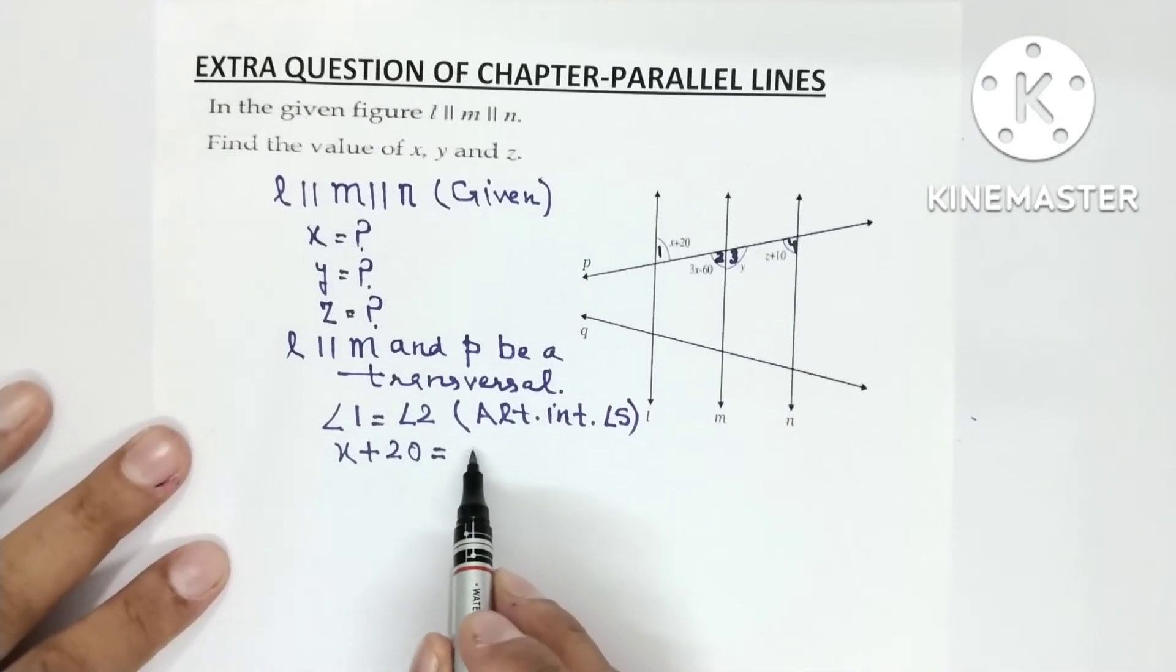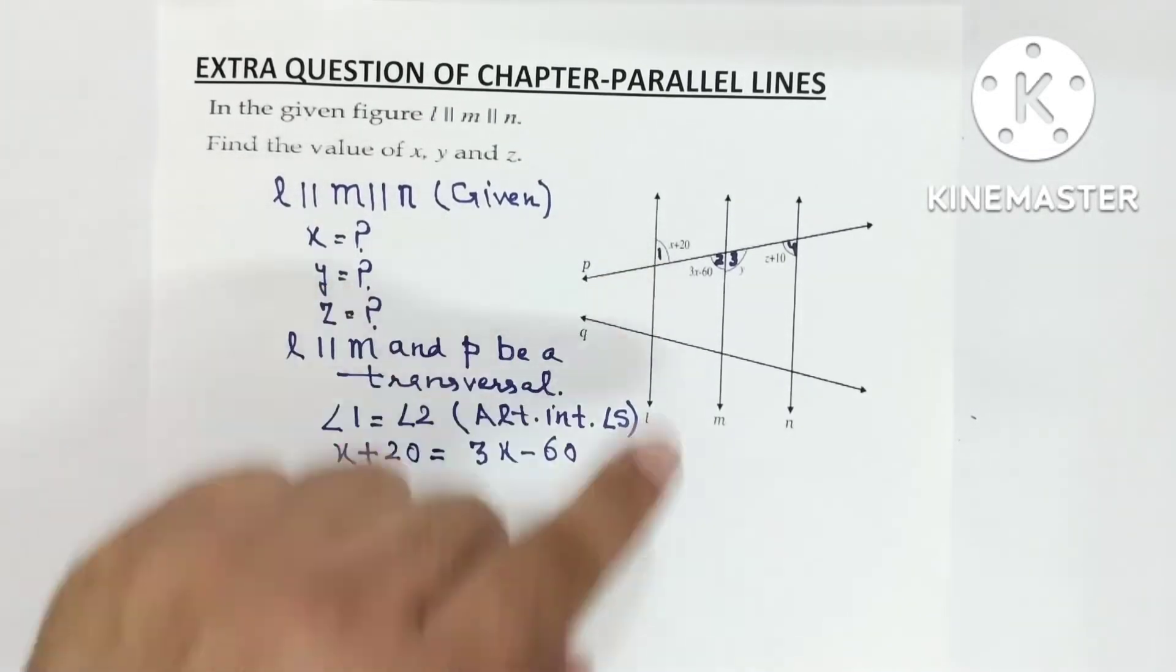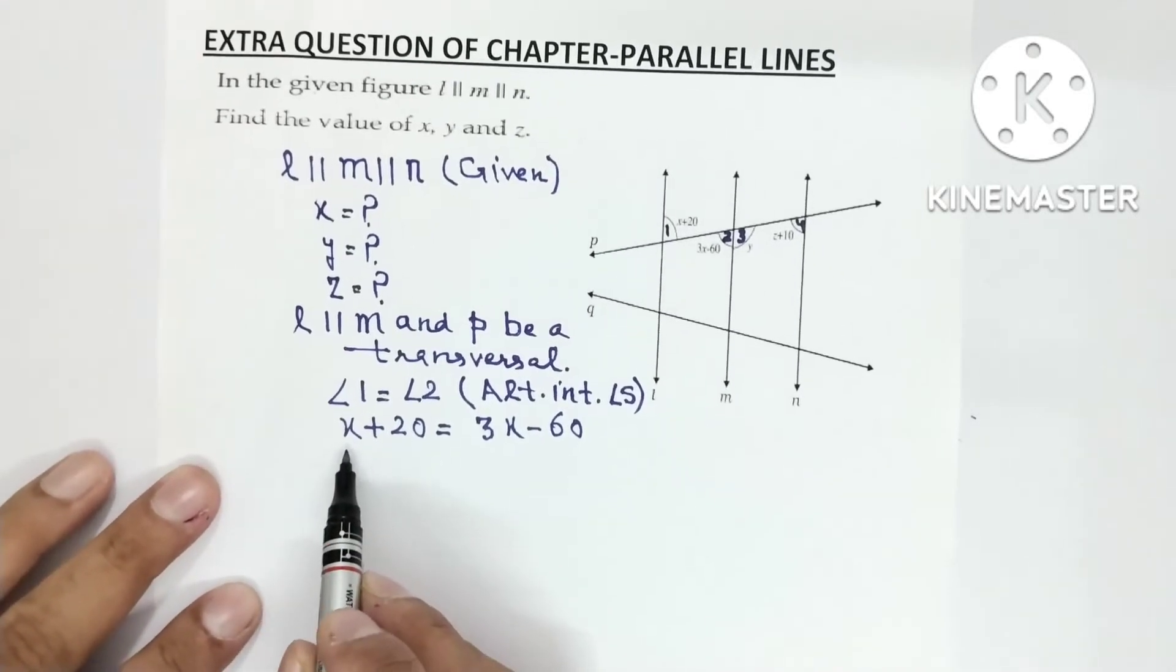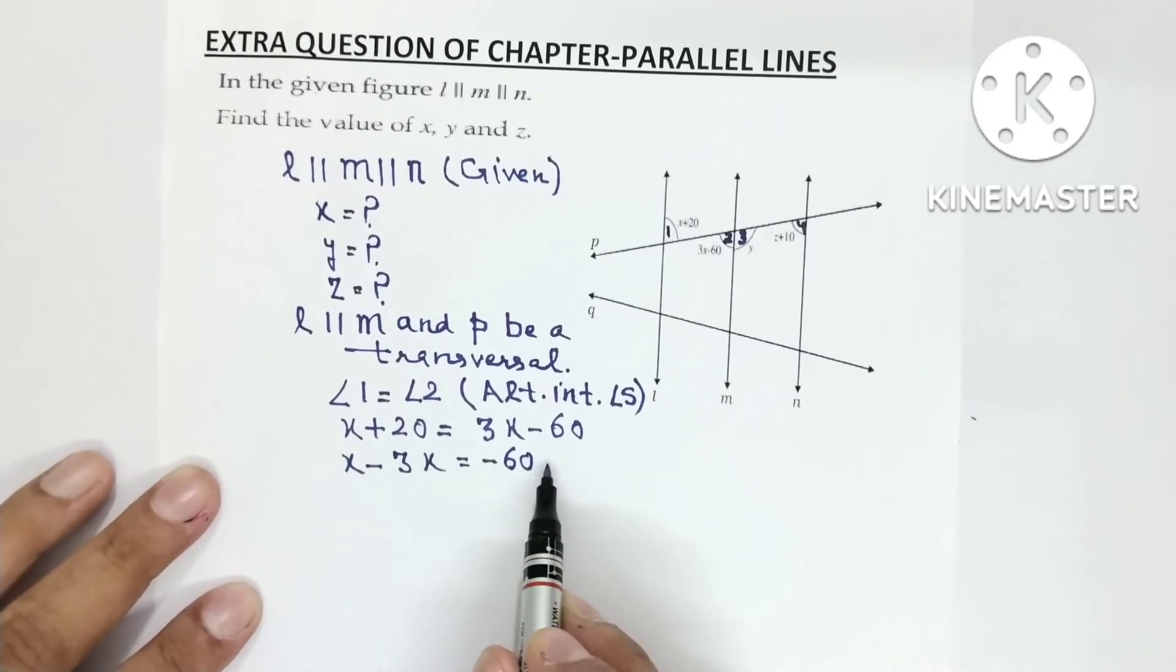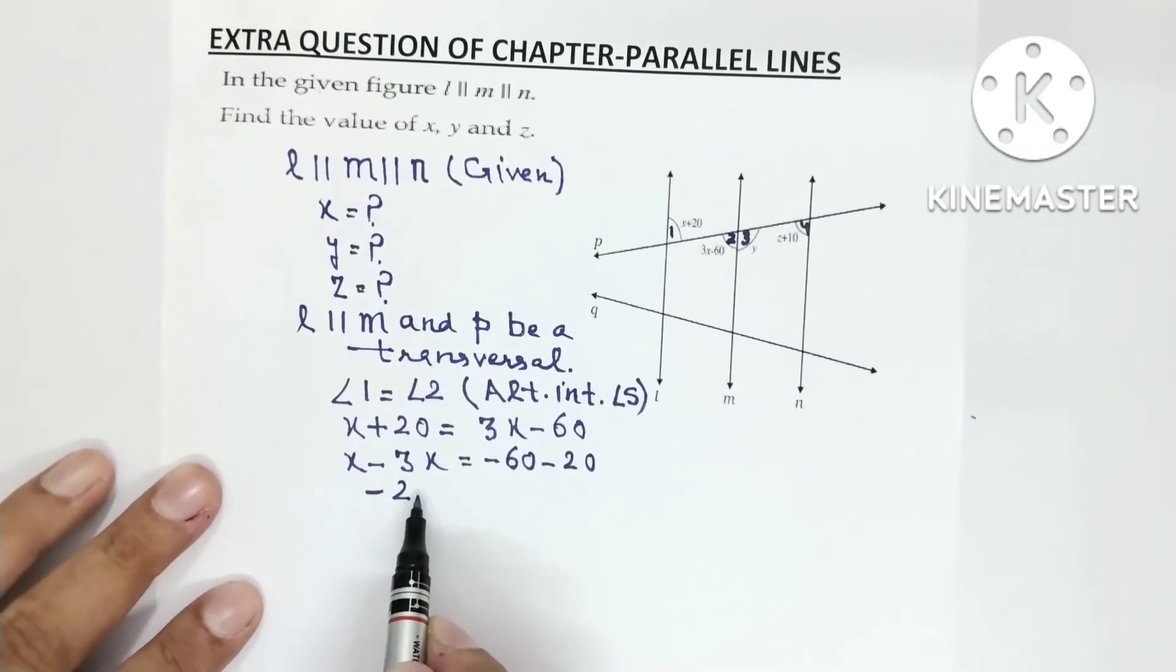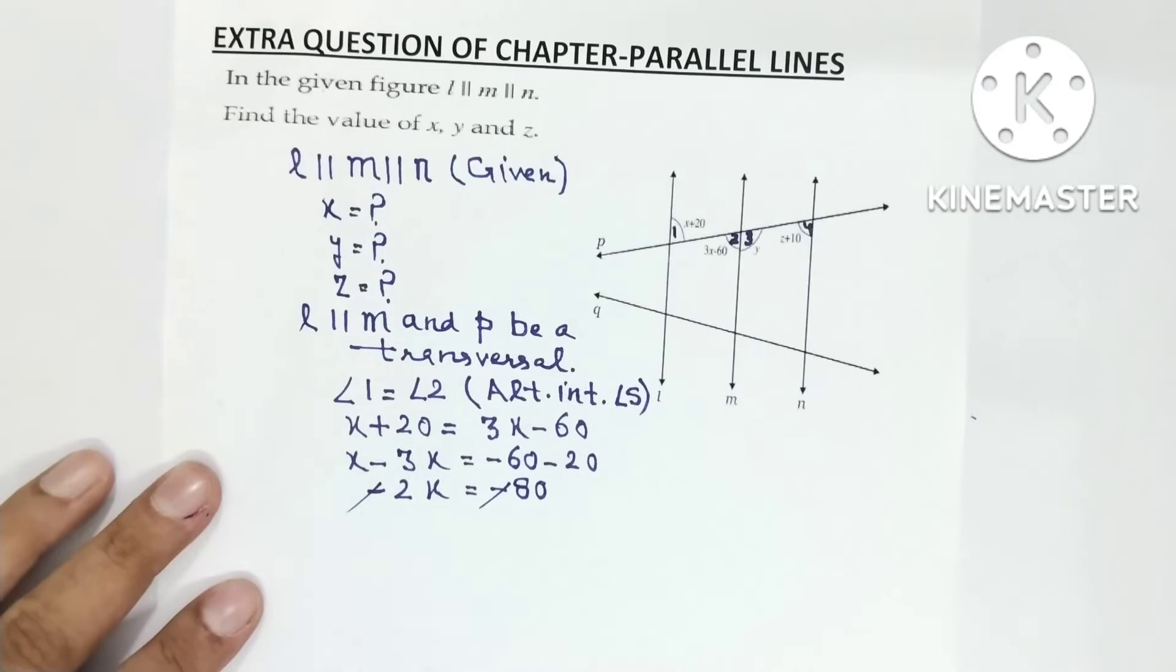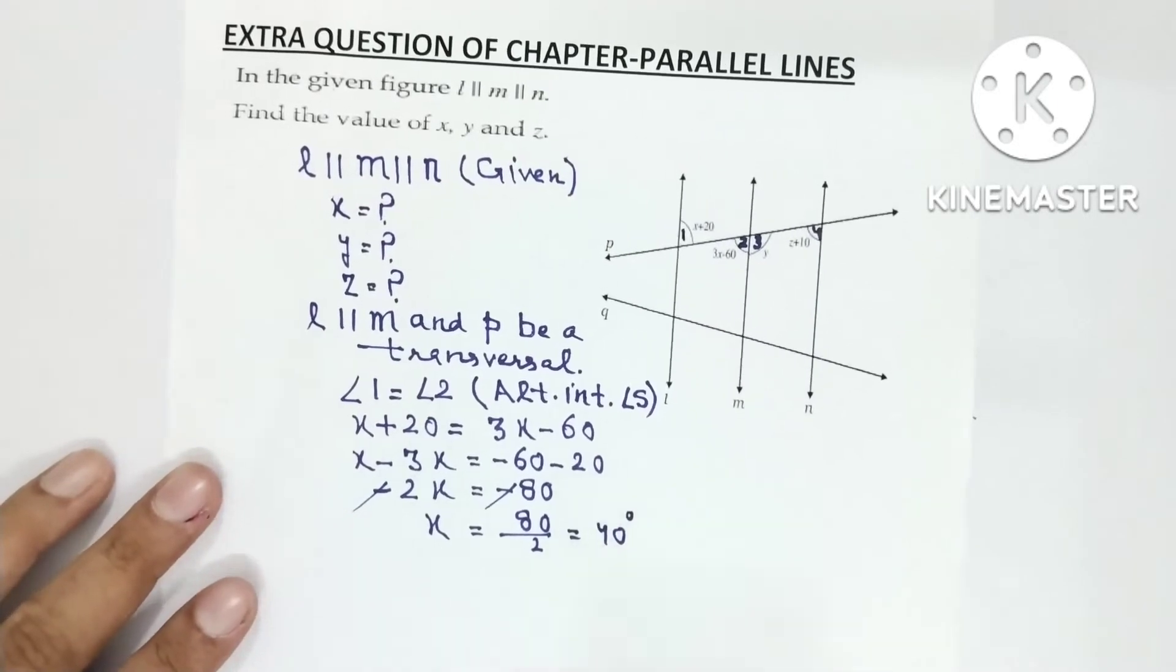It is equal to angle 2 value 3X minus 60. So जैसे-जैसे जिसको, आपने जो labeling की उसकी value आप लिख देंगे. 1 था X plus 20 और 2 है 3X minus 60. अब आप यहाँ से X find out करेंगे. X plus 20 equals 3X minus 60. Minus 2X equals minus 80. Minus and minus cancel, so X will be equal to 80 upon 2 that is equal to 40 degree.